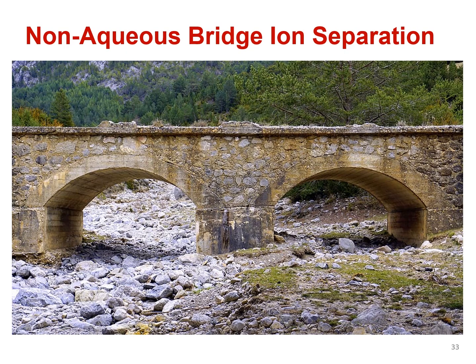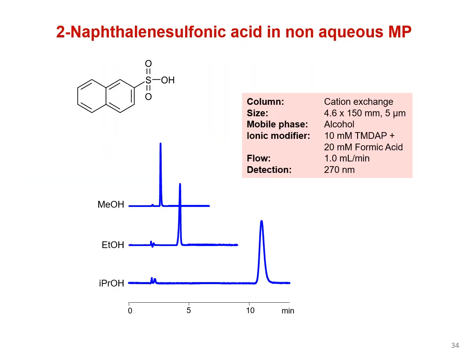Amazingly, BIST retention can even be generated without any water at all. We can completely replace the acetonitrile-water model for the mobile phase with 100% alcoholic mobile phases. Methanol, ethanol, and isopropanol each have slightly different polarities and thus can mimic the BIST behavior of standard acetonitrile-water mobile phases.